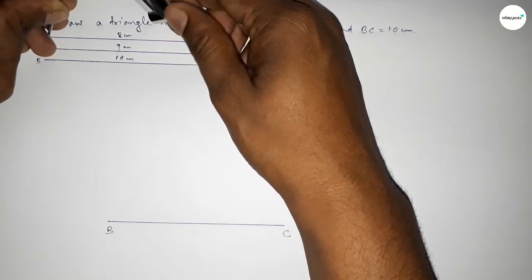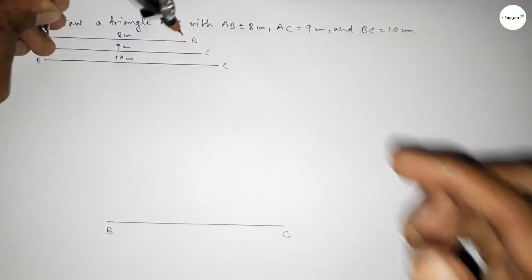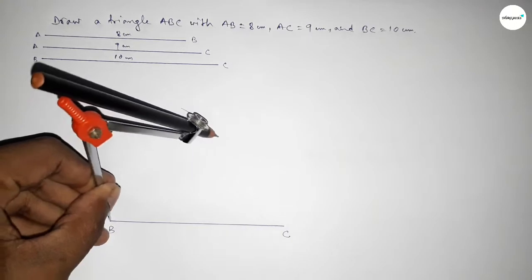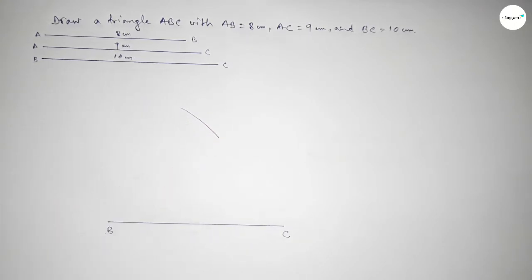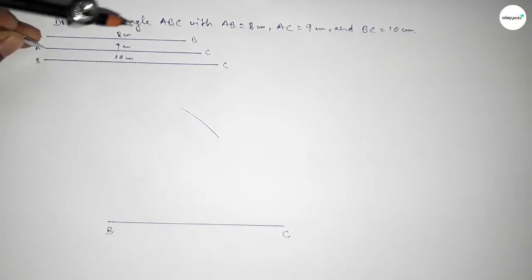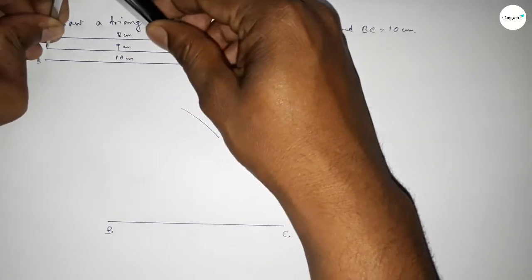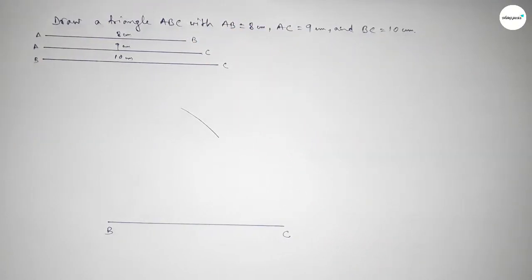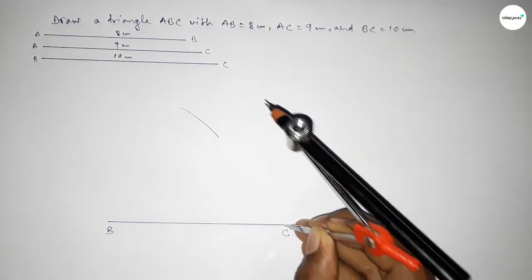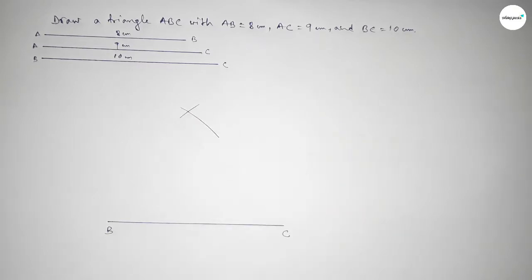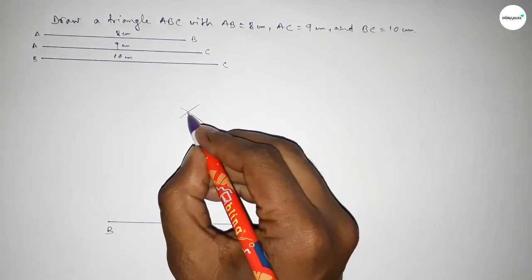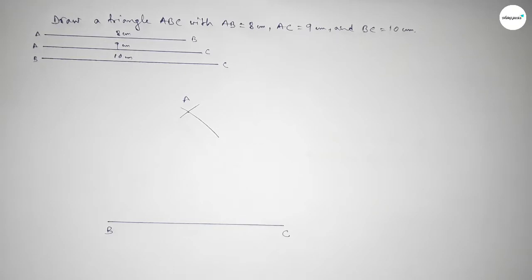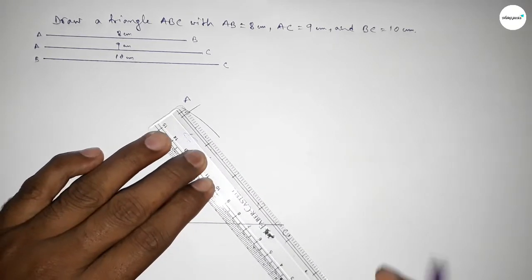Now taking the length AB equal to 8 centimeters using a compass and putting the compass on point B, drawing an arc. Again taking the length AC equal to 9 centimeters using the compass and putting the compass on point C and cutting here. Both curves intersect at a point — taking here point A.